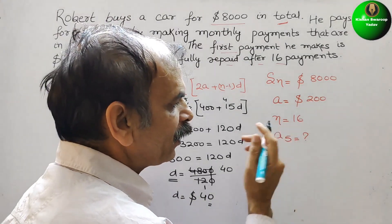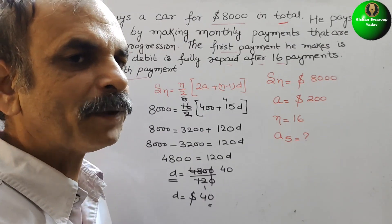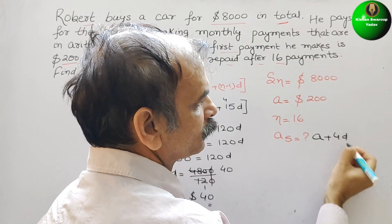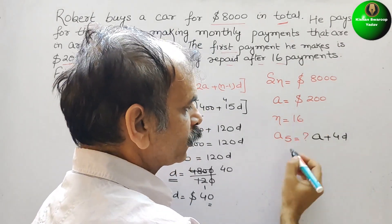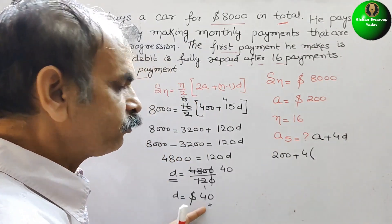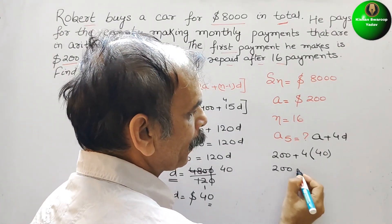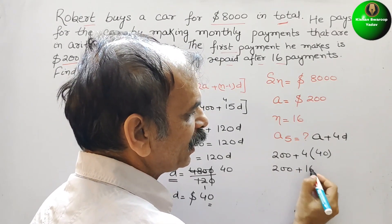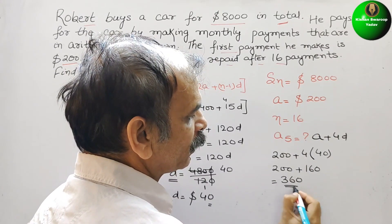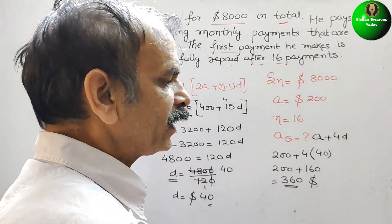Now they have told we have to find out A5. What is your A5? That is nothing but A plus 4D. Substitute here: A is 200, plus 4 into D which is 40. So we will get 200 plus 4 into 40 is 160. So this will be 360 dollars. So now we can say the 5th payment is $360.